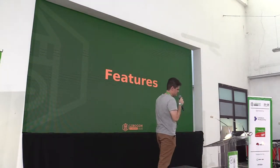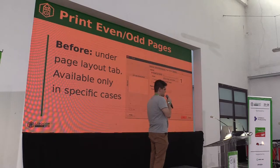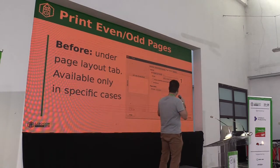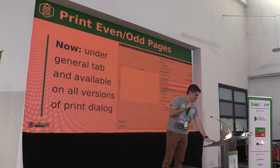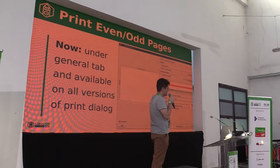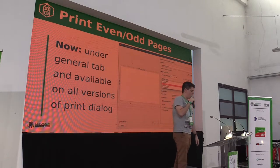Now I'm going to talk about some features. The first one is 'print even and odd pages,' which was only available in specific cases. For example, in Writer it was not available at all, and for Impress it was only available if you were printing in brochure mode — if you were printing regular slides, it was not available, as you can see it's disabled. Right now it's in the general tab, and you can select whether to print all slides, a selection, or even or odd slides. It's very simple and straightforward, and it's now available in all print dialogue versions.